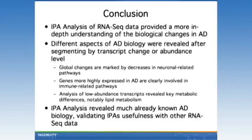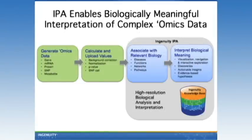Today we focused primarily on gene expression information, but I want to remind those not familiar with IPA that it can be used for microRNA, protein, SNP, and metabolite data. All you need to do is your upfront calculations, upload that data into IPA, and we can help elucidate key diseases, functions, networks, and pathways related to that data set to look for enrichment. And then, as we showed today, once you start getting into the visualization and navigation, that allows you to make new discoveries, actionable insights, and come up with evidence-based conclusions.